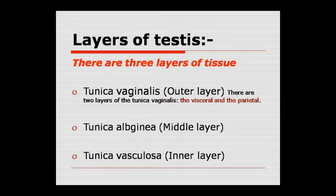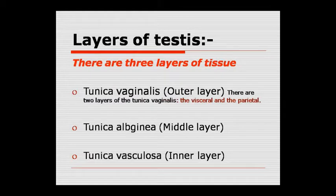The testis has 3 layers as we studied in the introductory class. The three layers are tunica vaginalis, tunica albuginea, and tunica vasculosa. Tunica vaginalis is the outer layer, tunica albuginea is the middle layer, and tunica vasculosa is the inner layer. Tunica vaginalis itself has two layers: a visceral layer and a parietal layer.